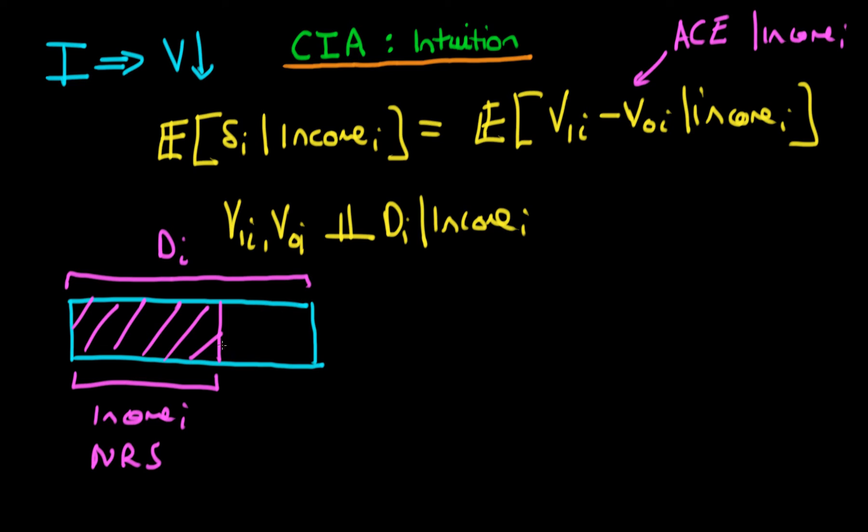But then there is also a part of Di which is, in a sense, random. And it's this bit on the right-hand side here. And these are essentially, or this is the variance in Di, which is not to do with the income of that particular state.